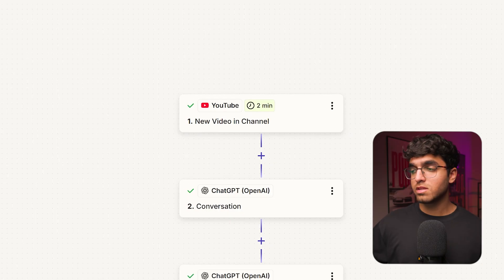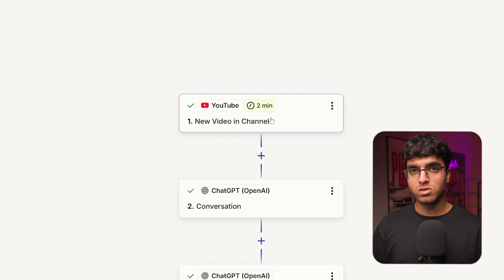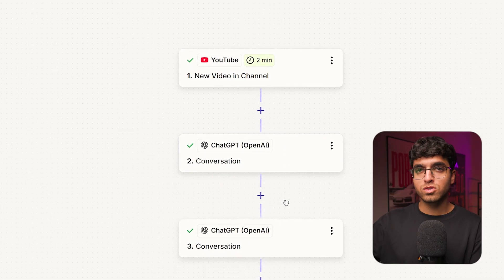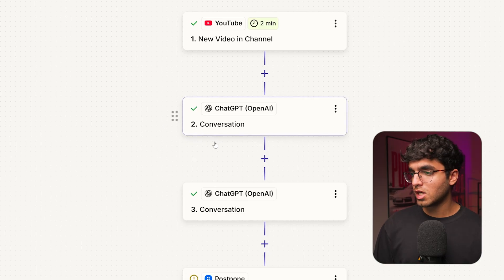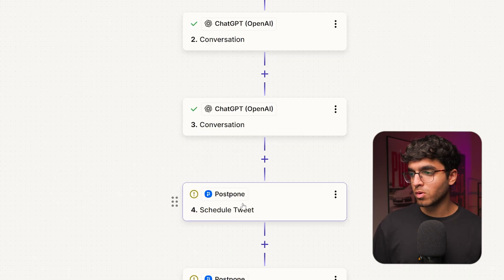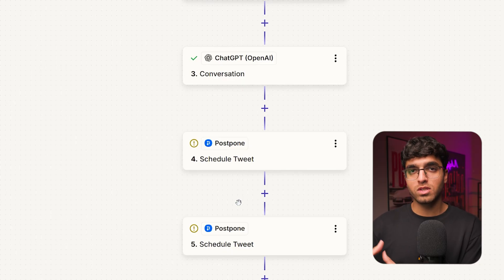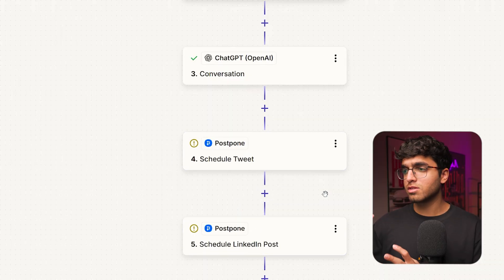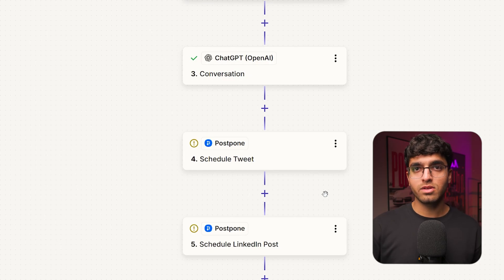This is going to save you a lot of time and funnel people from those platforms to your YouTube channel, eventually turning them into paying clients. Inside Zapier, we use a YouTube node to watch for new videos on your channel — you'll need to connect your Google account. ChatGPT is then used to summarize the title and description into a LinkedIn post and a Twitter post. We use the Postpone node, a tool for automatically posting to multiple social media apps, to publish the tweet and LinkedIn post. Again, the link to this workflow is in the description.